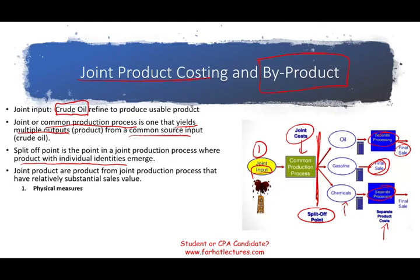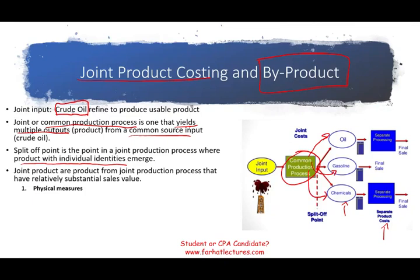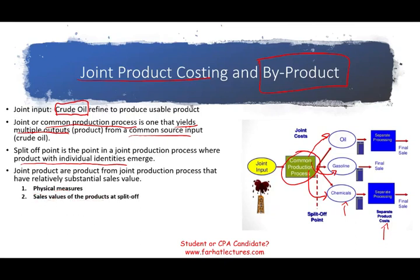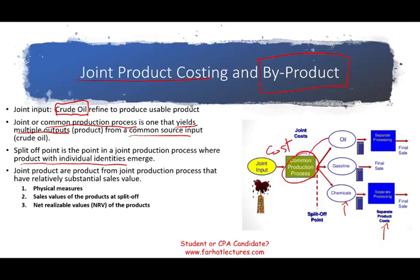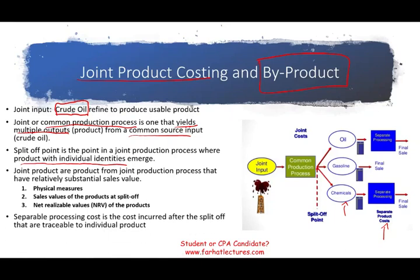Those are the basic terminology. The key in this session is how to allocate this joint cost. We have a common production process cost — how much to allocate to oil, how much to gasoline, how much to chemical. We're going to learn three methods: physical measures, sales value at the split-off point, and net realizable value. That's the heart of the lecture — how do we allocate the joint cost to the several joint products. Separable processing costs are accounted for separately, because those belong to a specific product.